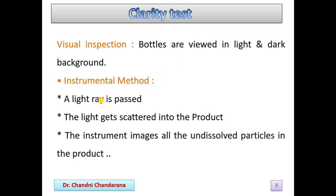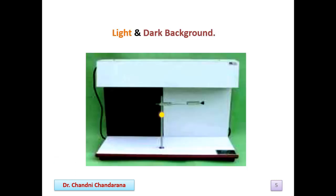For the instrumental method, we pass light through the product and the light gets scattered by particles inside. The instrument images all the undissolved particles in the product. Here we can see there is a light background as well as a dark background, and we put the sample there to measure it.